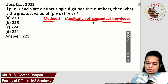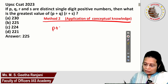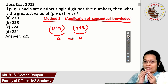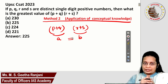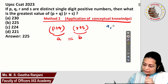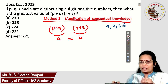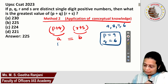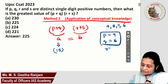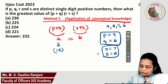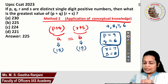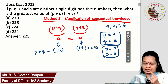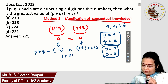Under Method 2, applying conceptual knowledge, we treat P+Q and R+S as two variables, assigning them A and B respectively. The concept is: when A equals B, we will definitely get the greatest value. The 4 greatest values are 9, 8, 7, 6. Assign P=9 and Q=6, so P+Q=15. Assign R=7 and S=8, so R+S=15 as well. When A=B=15, the product is 15×15=225, which is the answer.